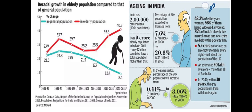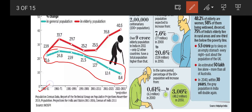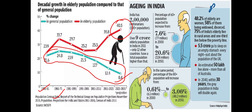Looking at this graph, we can see trends in both the general population and the elderly population. The green marking represents the general population. The percentage changes are notable — for example, in 1951–61 it was 21.60%, in 1961–71 it was 24.8%, and in 2021–31 it is projected to be 8.4%. For the elderly population, in 2021–31 it would be around 40.5%. Overall, we can see the elderly population growing from 7.6% to a projected 20.6% of the total population by 2050.